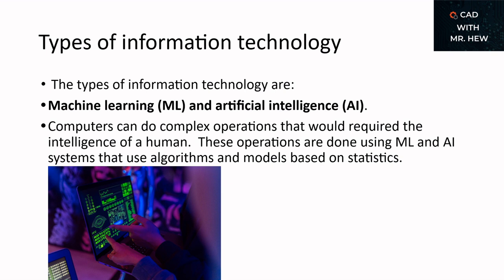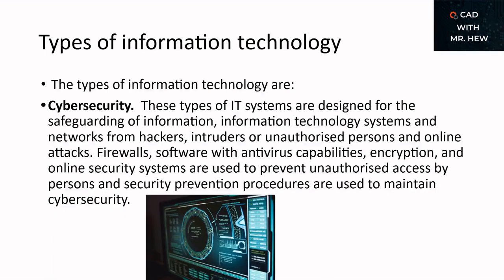Machine learning, abbreviated as ML, and artificial intelligence, abbreviated as AI, are also types of information technology. Using these, computers can perform complex operations that would normally require human intelligence. These operations are done using machine learning and artificial intelligence systems that use algorithms and models based on statistics.